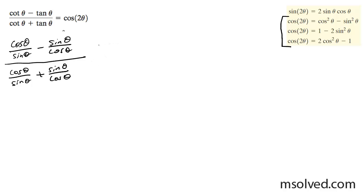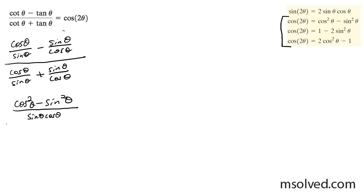What I'm going to do now is group the numerator and denominator and get common denominators for the top and bottom. For the top, I'm going to multiply through to get sine and cosine. So on the left, I'm going to get cosine squared minus sine squared, all over sine theta cosine theta.